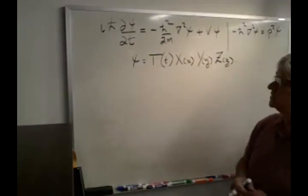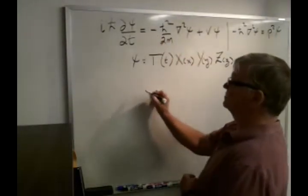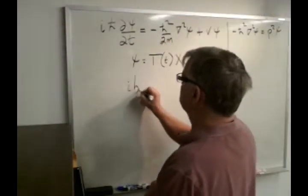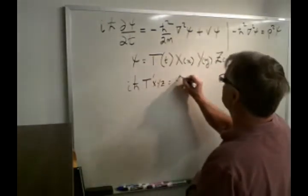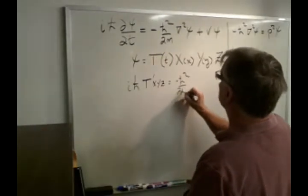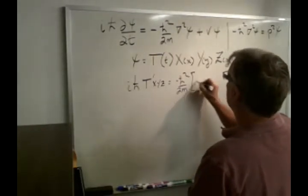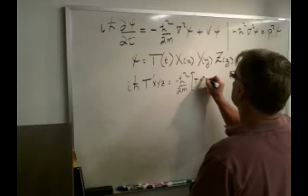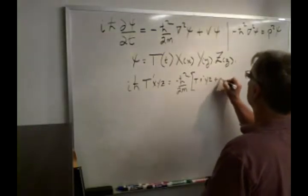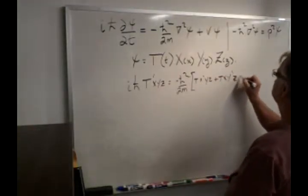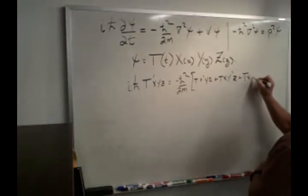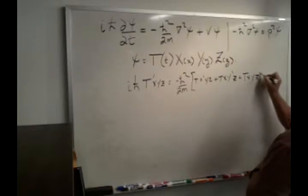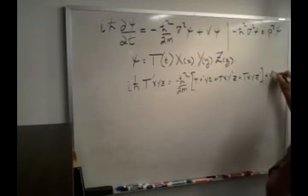We multiply all of these together and substitute back. Just to make it easy, we'll go: iℏT'XYZ equals minus ℏ² over 2m times TX''YZ plus TXY''Z plus TXYZ'' plus V times TXYZ.